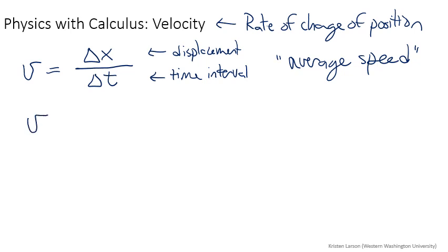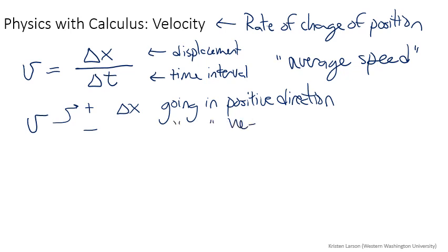If the velocity is positive, that means you had a delta x that was positive, so you are going in the positive direction. If it's negative, that means your delta x was negative, so you are going in the negative direction.